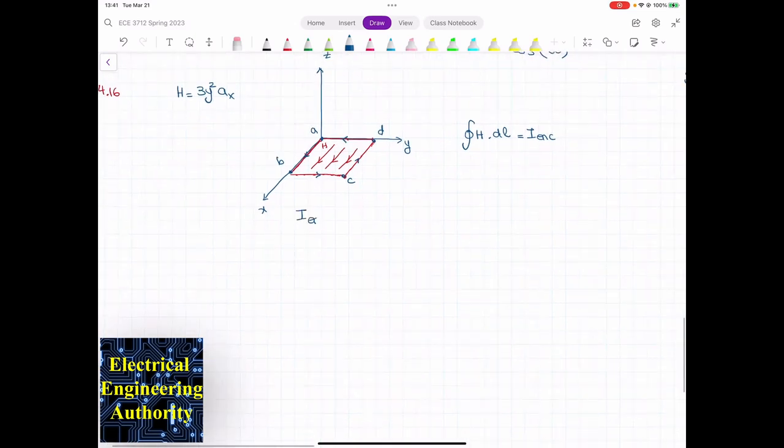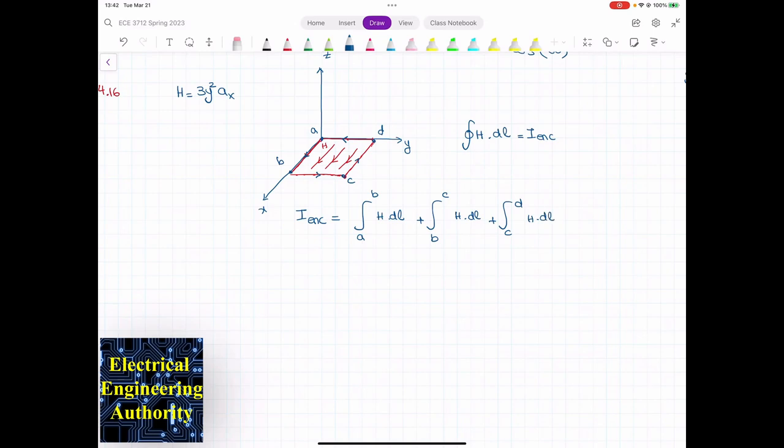So I enclosed, we said that is equal to the integral of H·dL when we go from A to B, plus integral from B to C of H·dL, plus integral of C to D of H·dL, plus the integral of D to A of H·dL.